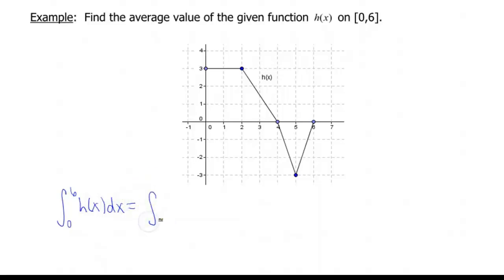That's gonna be the integral from 0 to 2, because that's a fairly nice shape, of h(x) dx, plus the integral from 2 to 4 of h(x) dx, because again, that's a nice shape. And then finally, the integral from 4 to 6 of our function h(x) dx, because again, that's a nice shape. Okay, so these nice shapes, so now we need to figure out the areas of them.